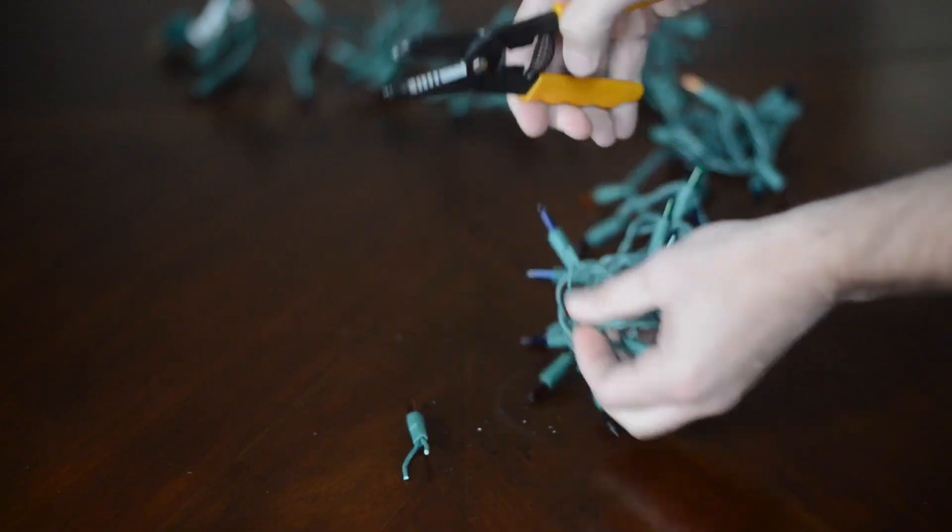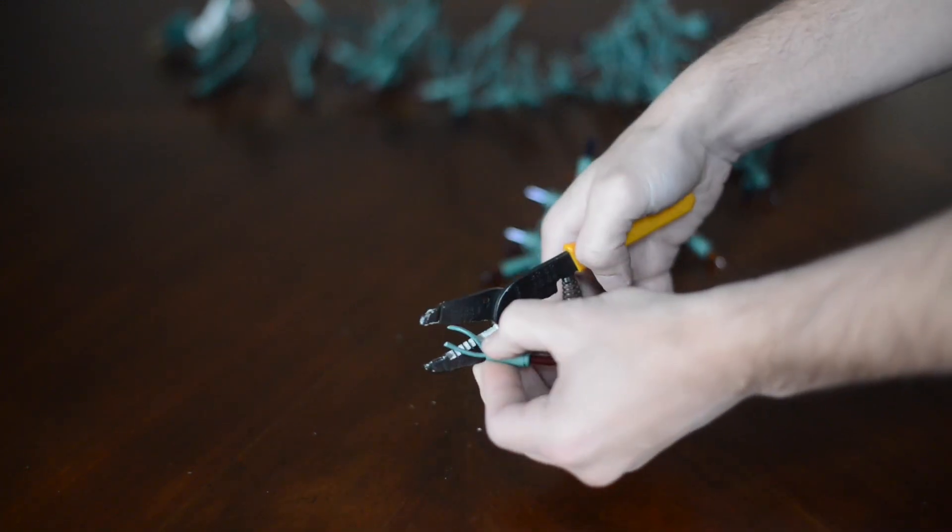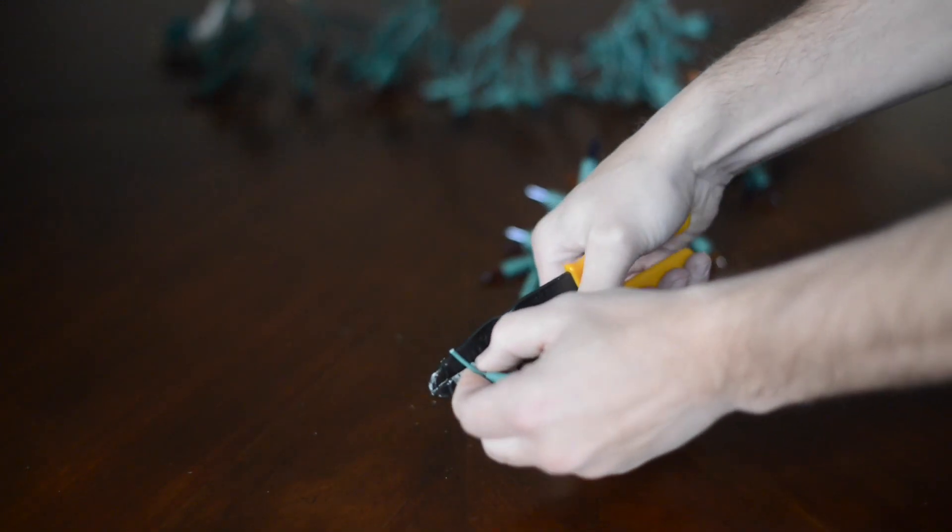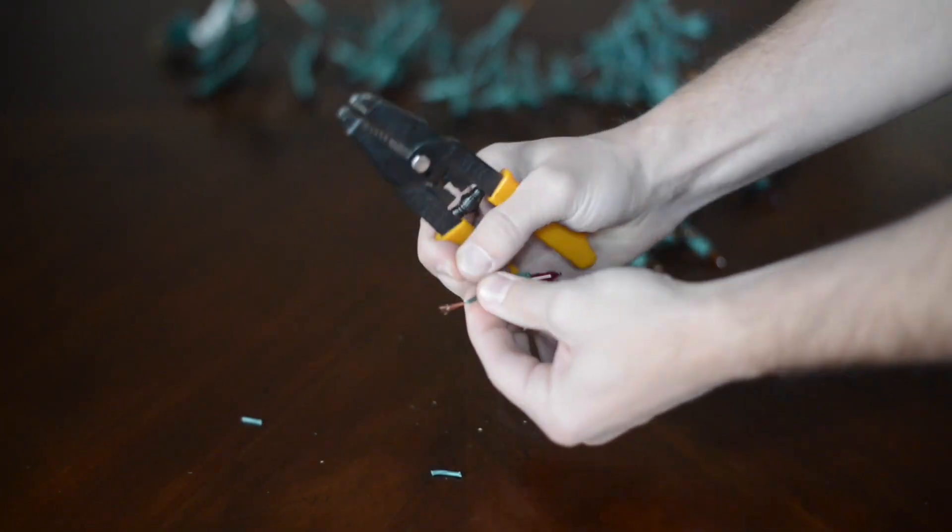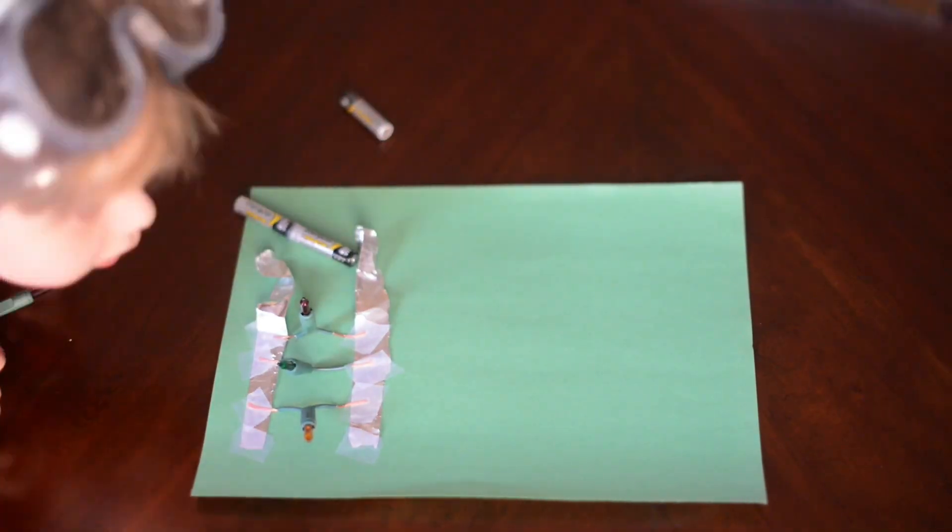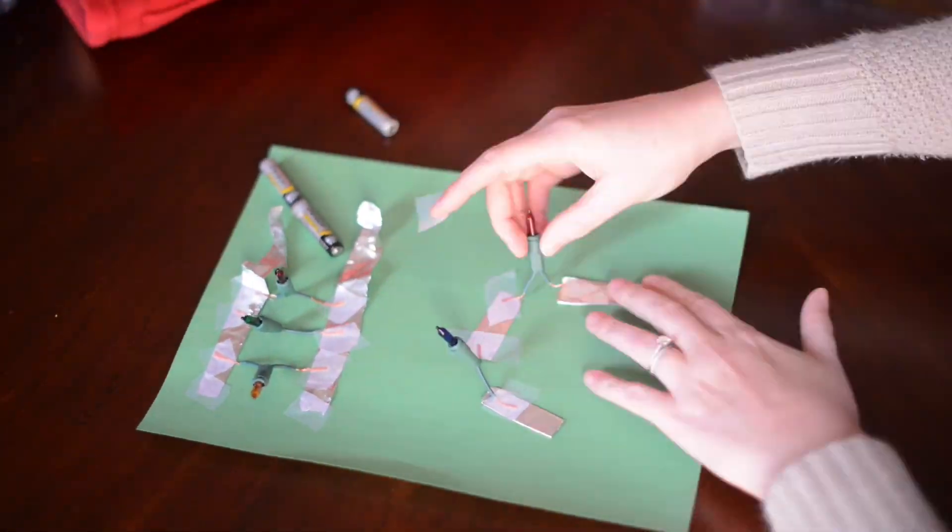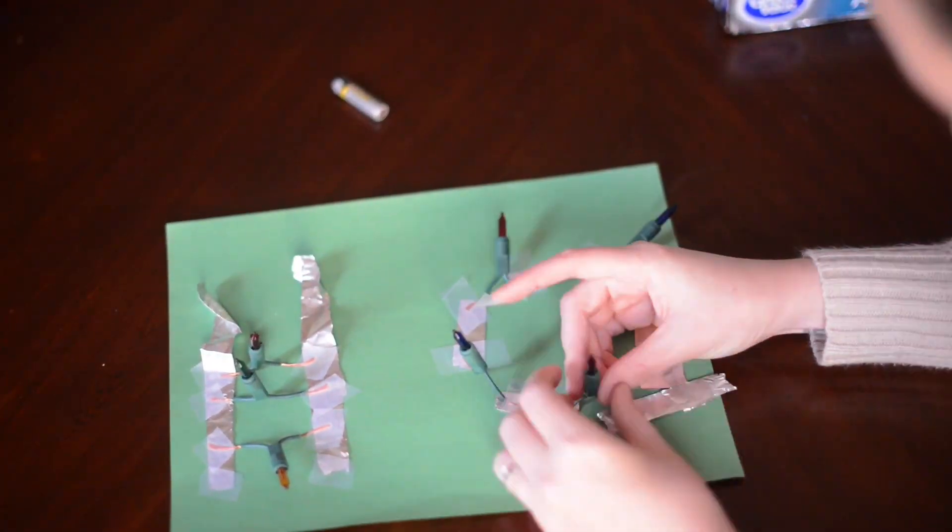You want to cut the bulbs off and then strip the wires so that you can actually see the wires. And then you want to tape the tinfoil to paper and then tape the wires to the tinfoil to create a circuit.